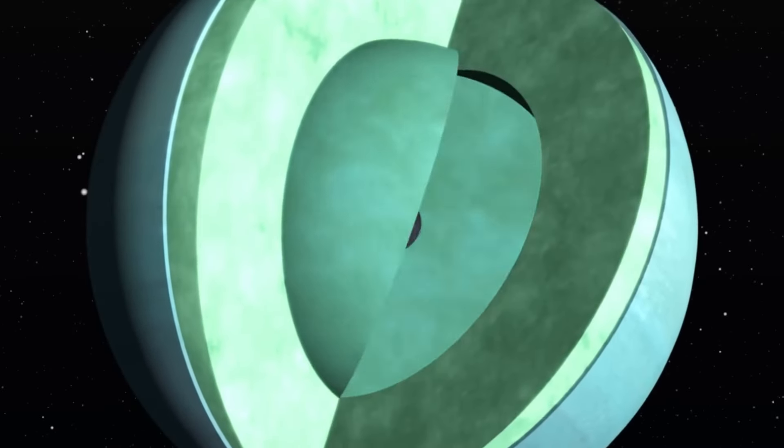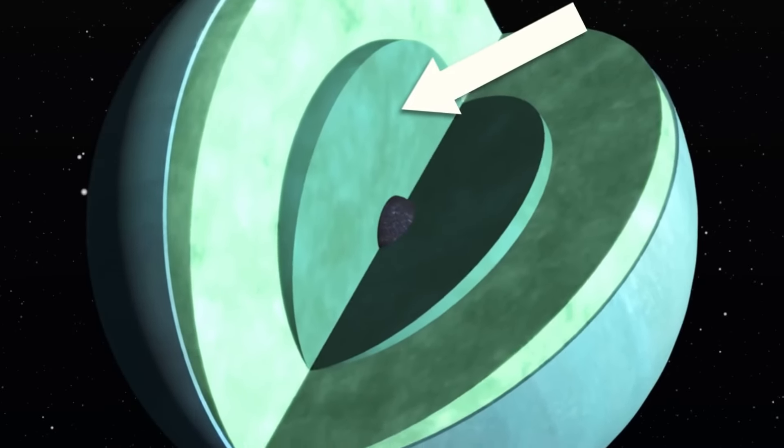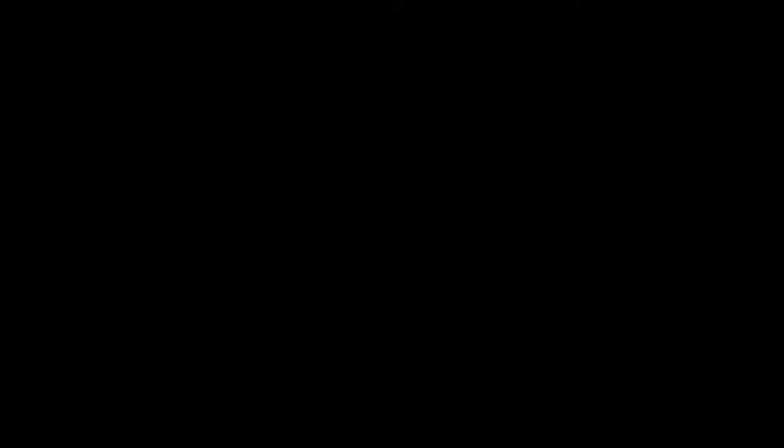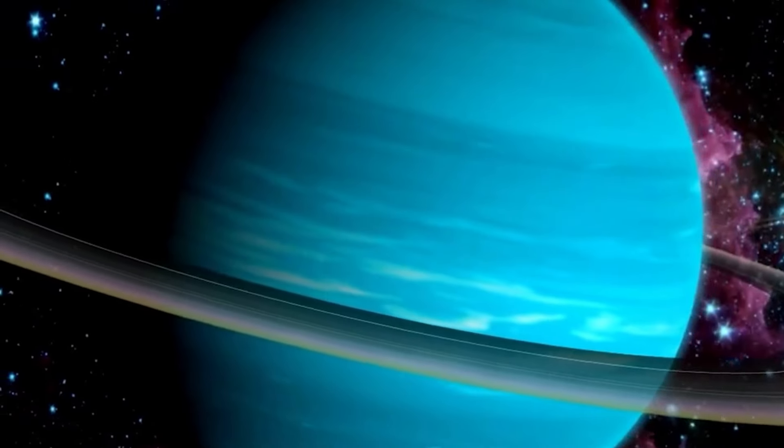The good news is you wouldn't splatter on anything because there's not much in the way of solids on Uranus. The Uranian mantle is made of water, ammonia, and methane ice.